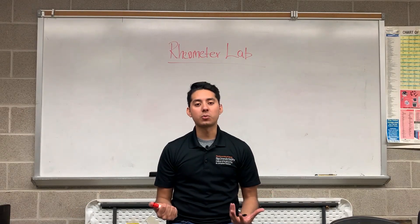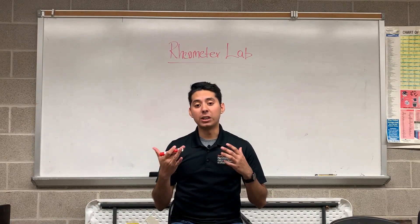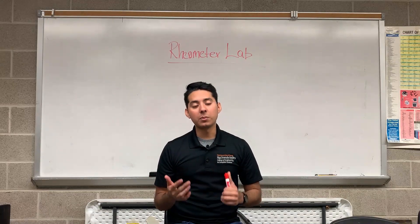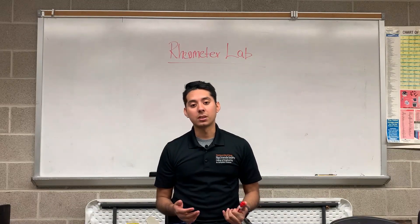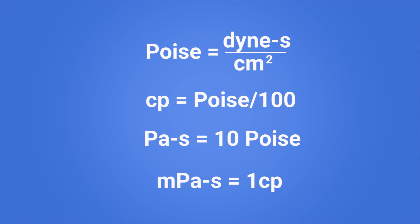How do we measure viscosity? Viscosity can be measured in different units, but the main one is called the poise, which represents one dyne-second per square centimeter. Other units include the centipoise, which is one of the most common and equals a poise divided by 100; the pascal-second, which equals 10 poise; and the millipascal-second, which equals one centipoise.